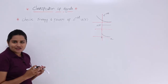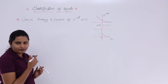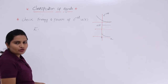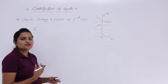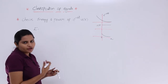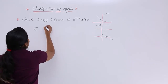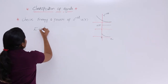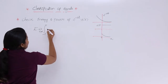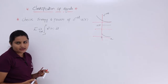To calculate energy or power for an infinite duration signal, we calculate energy first since we don't yet know whether it is an energy or power signal. Energy is equal to the limit as T tends to infinity of the integral from -T to T of x²(T) dt — this is the formula to calculate the energy of a signal.